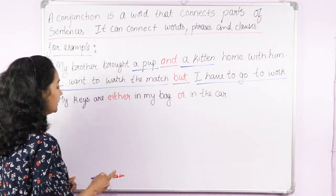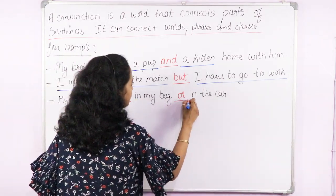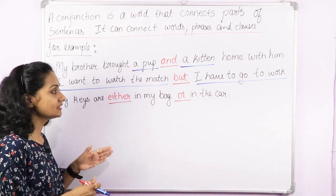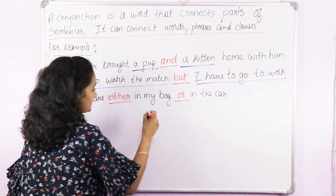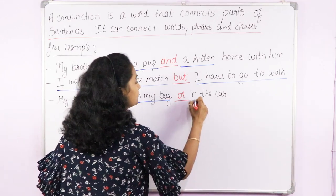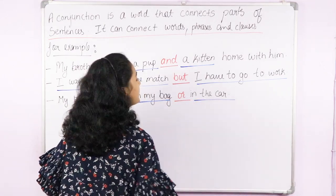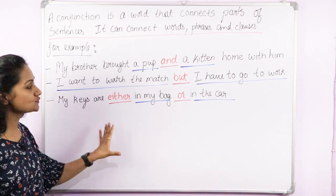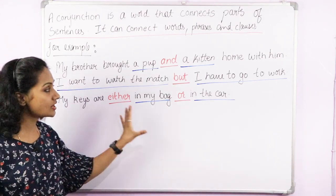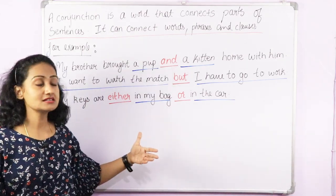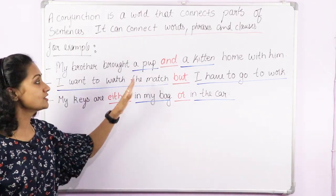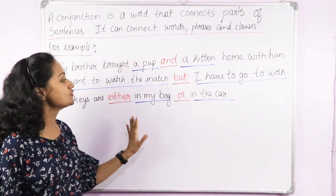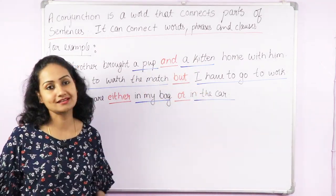And in the third sentence, 'My keys are either in my bag or in the car.' So here 'either...or' is a conjunction and it's connecting two phrases — 'in my bag' is the first phrase and 'in the car' is the second phrase. So a conjunction connects two words, two clauses, or two phrases in a sentence.